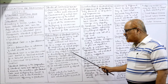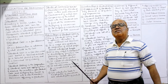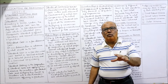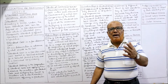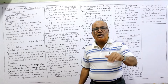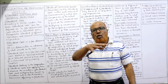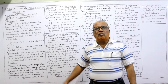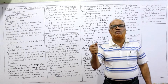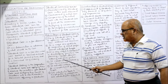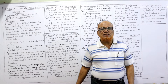Standard costing is very useful to management for discharging functions like planning, controlling, decision making, and price fixing. This standard costing will be very helpful to the management for performing its functions — the management has to plan, has to control, has to decide, has to fix the price. In all these activities, standard costing will be a very handy tool, very much helpful to the management.